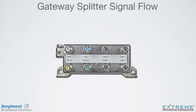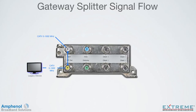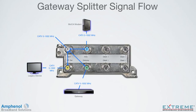Let's look at the signal flow through the gateway splitter. First we'll follow the traditional CATV frequency path. The input port will pass traditional CATV frequencies from 5 to 1002 MHz. From the input port, the signal flows to the RF output port, where CATV legacy devices such as TVs and set-tops would be connected. The input port also feeds the modem port, where a standard or MOCA modem would be connected. The input also feeds the gateway port, where the MOCA gateway device would be connected.